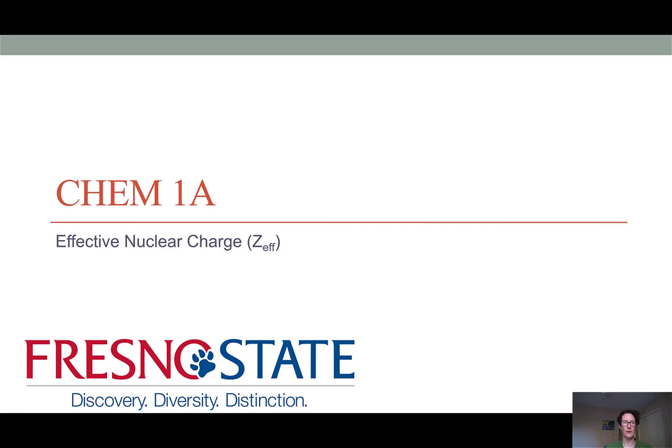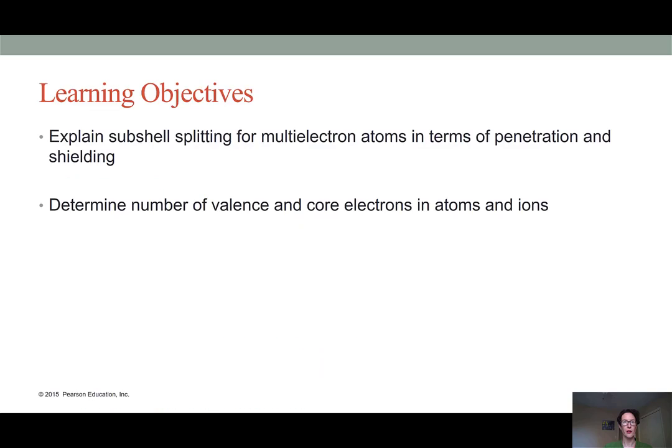Hello class. For this lesson I'll be focusing on electron shielding and repulsion as well as penetration to help us understand the nature of valence electrons. The learning objectives are to explain subshell splitting for multi-electron atoms in terms of penetration and shielding, and from this we will determine the number of valence and core electrons in various atoms and ions.